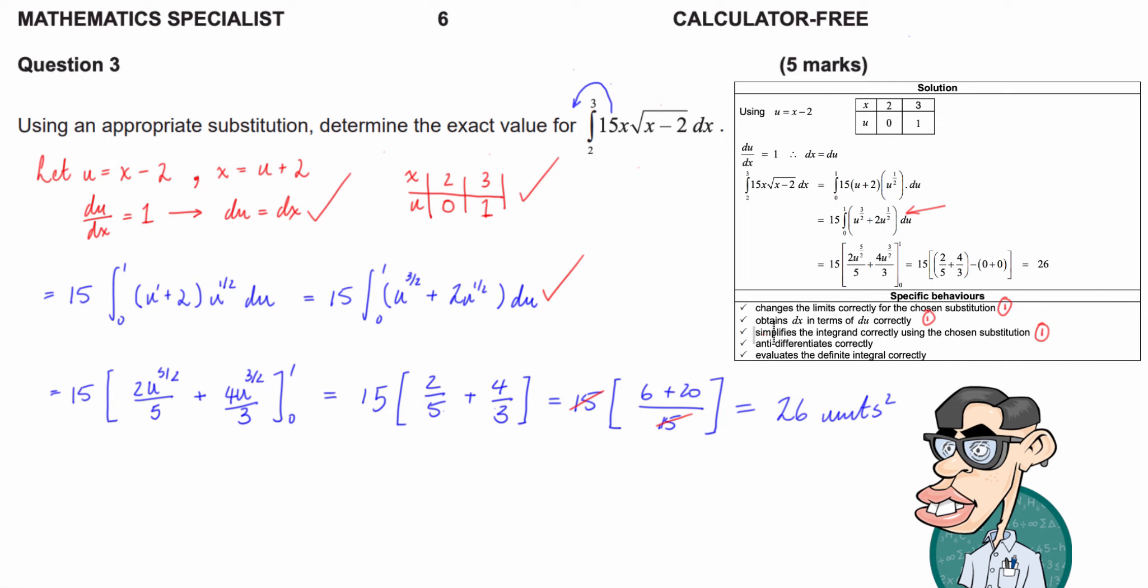Fourth. Actually do the anti-differential correctly. So 2u to the 5 over 2 over 5. 4u to the 3 over 2 over 3. Cool so there's a fourth mark. Then evaluates the definite integral correctly. So 26. Perfect so that's 5.